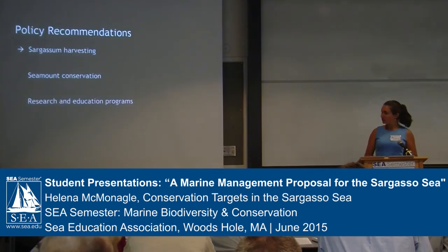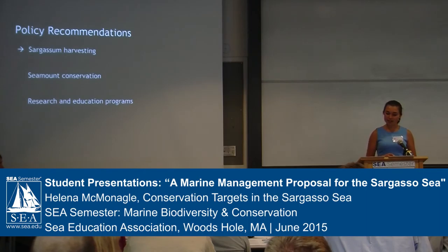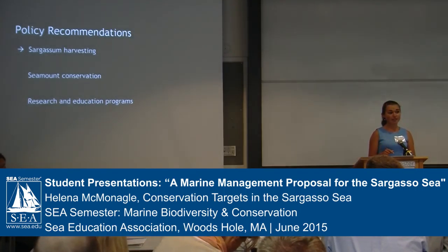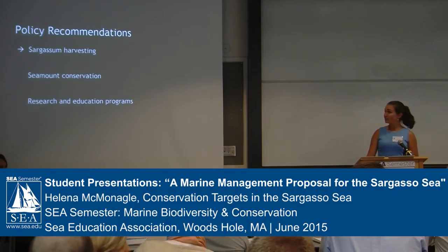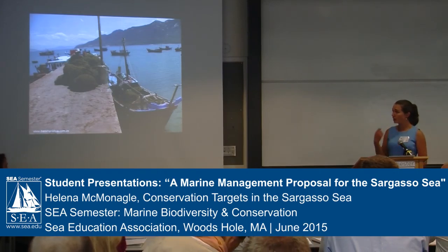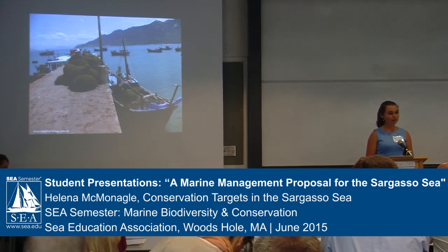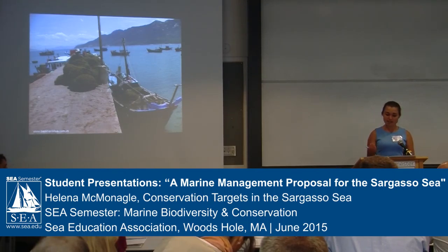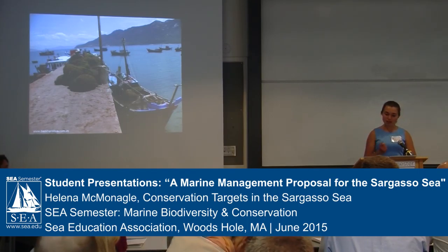Now that we've covered the natural resources we care about protecting in the Sargasso Sea, let's talk about how we plan on protecting them. After substantial discussion and debate, our entire class came to a consensus on the following policies now in our management proposal. First, we propose a moratorium on Sargassum harvesting. Sargassum is used as a fertilizer, for cattle feed, and has been proposed for use as biofuels and other uses. Our moratorium on Sargassum harvesting would continue until a sustainable harvest quota could be determined through further research.